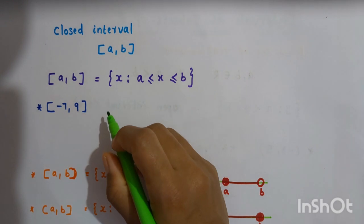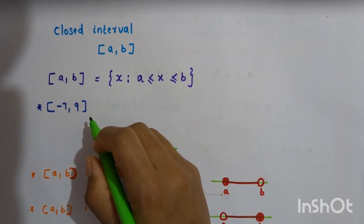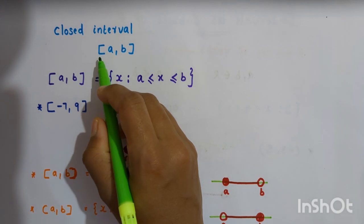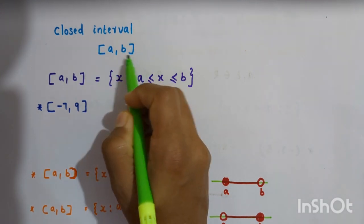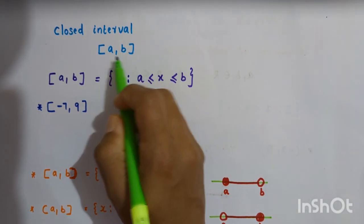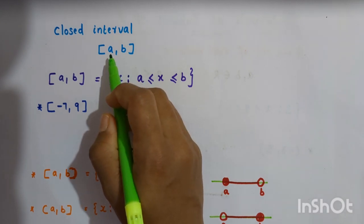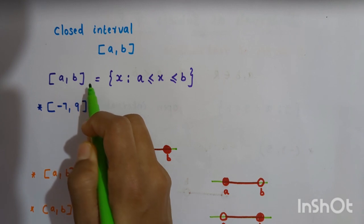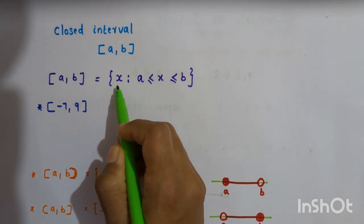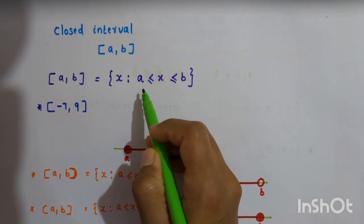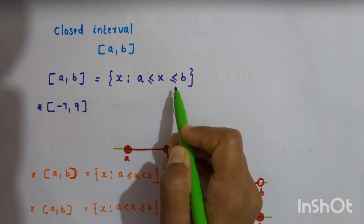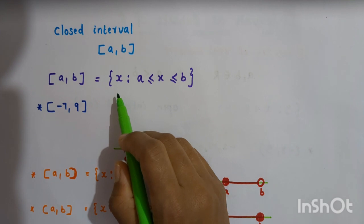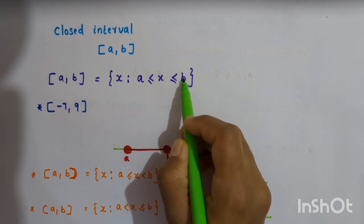The interval which contains the endpoints is called a closed interval. A closed interval is denoted by two closed brackets and written as [a, b]. The closed interval [a, b] is defined as the set of all x such that a ≤ x ≤ b. This interval contains both endpoints a and b.